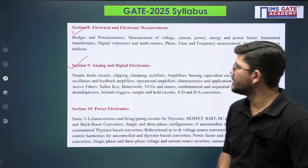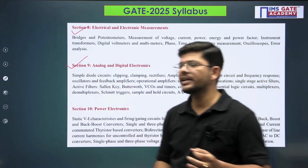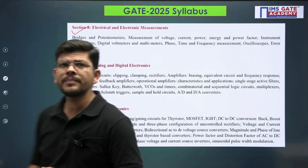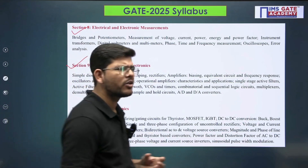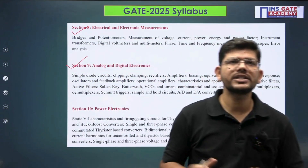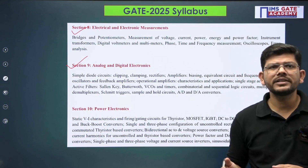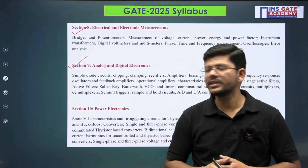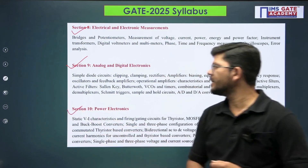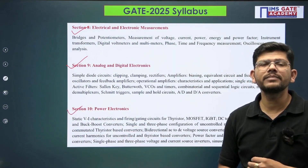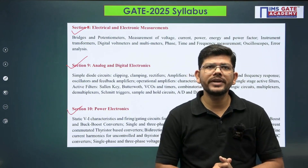In section nine, Analog and Digital Electronics: you'll cover simple diode circuits, simple BJT biasing circuits, and basic MOSFET concepts. Under digital electronics, you'll cover combinational and sequential circuits, and Boolean algebra. In section number ten, we have Power Electronics — an important subject.